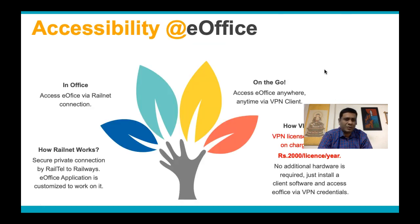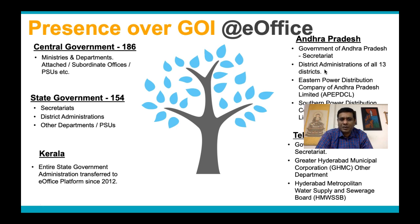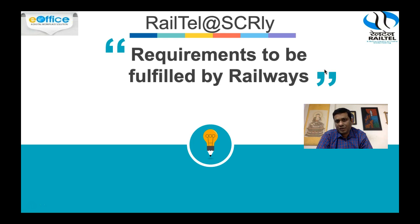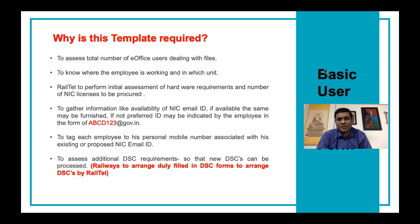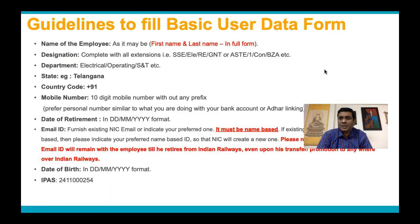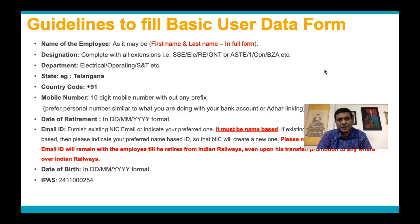We saw how eOffice is accessible from various platforms and compatible with mobile devices, and how the platform is secured by a three-tier security system: RIC email IDs, OTP, and DSCs. We also saw that eOffice is already present in many Government of India departments and state governments. We started discussing requirements for the railways for a successful rollout, covering the basic user data form in detail. I request Railway Divisional In-charges or Journal In-charges to make these forms available to Railtel Corporation so we can process your NIS email IDs and procure the DSCs.